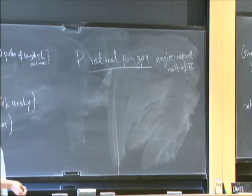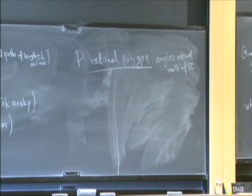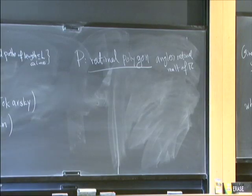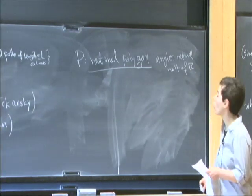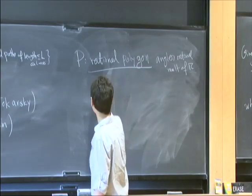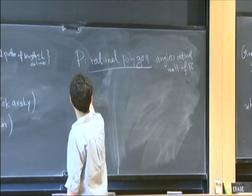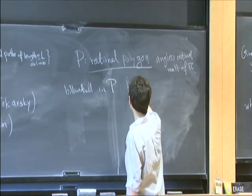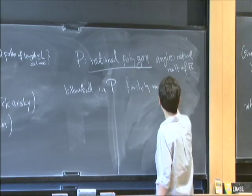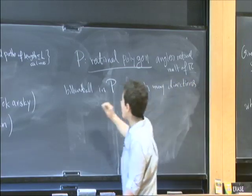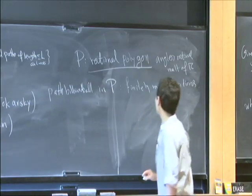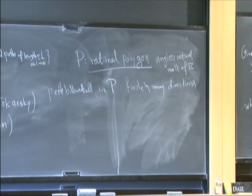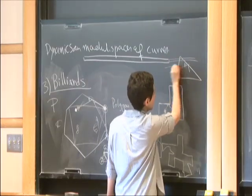A rational polygon is a polygon whose angles are rational multiples of pi. All these problems become more approachable for rational polygons — some are still open, but there is something to do there. The main reason is that if you have a billiard ball in P, the infinite path will have finitely many directions. So if you start from any polygon and you're changing the angle, you get finitely many angles, which makes things a little bit easier.